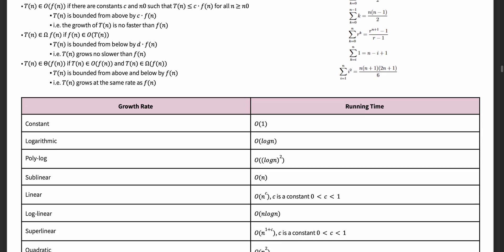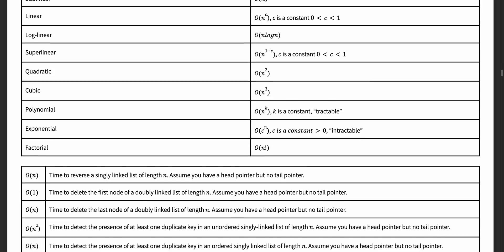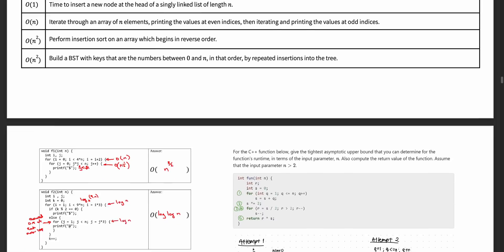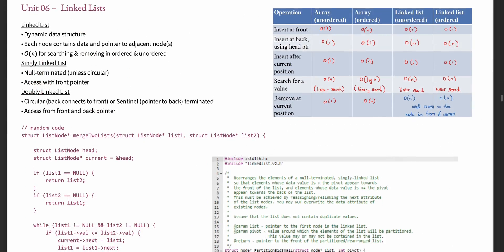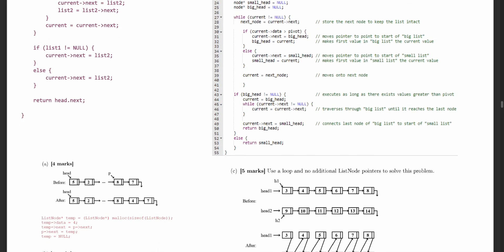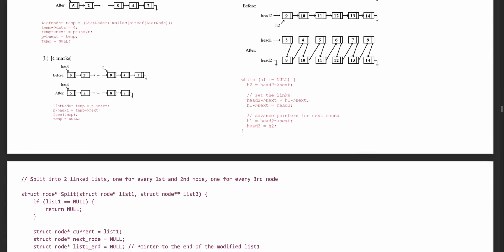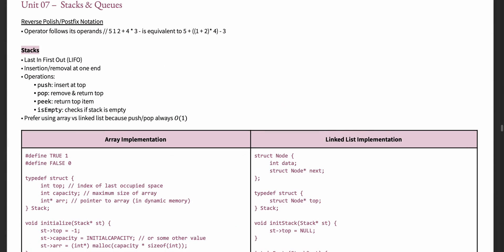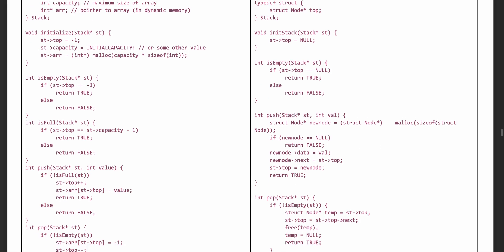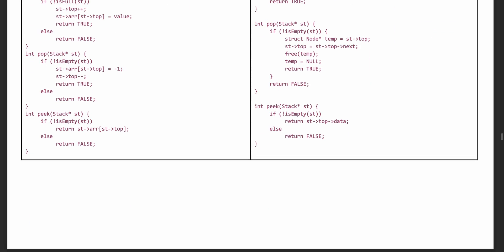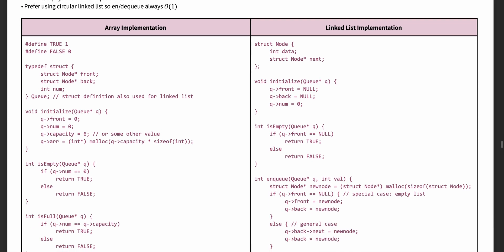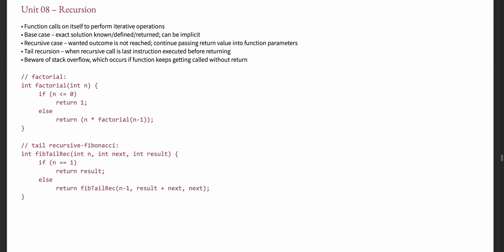In the second third of the course, you'll cover asymptotic analysis, linked lists, stacks and queues, and recursion. These topics get into more of the nitty-gritty of the data structures and algorithms theme of this course — linked lists, stacks and queues are all different types of data structures, recursion is a type of algorithm, and asymptotic analysis is used to examine the runtimes of different algorithms.